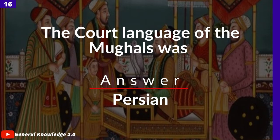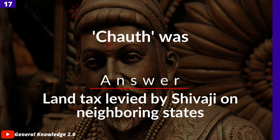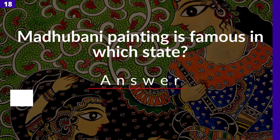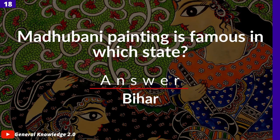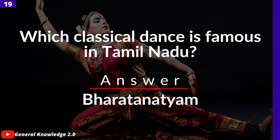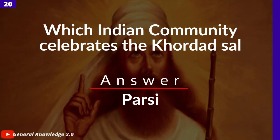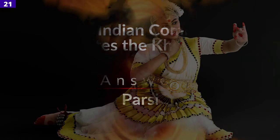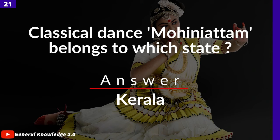The court language of the Mughals was — answer: Persian. Madhubani painting is famous in which state? Answer: Bihar. Which classical dance is famous in Tamil Nadu? Answer: Bharatanatyam. Which Indian community celebrates the Karma festival? Answer: Bihar. Classical dance Mohiniyattam belongs to which state? Answer: Kerala.